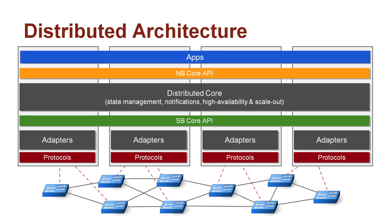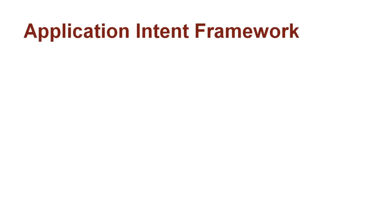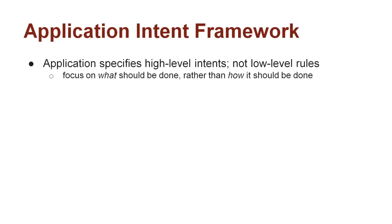ONOS abstractions include a global network view, allowing applications to program their view of the network, and an application intent framework allowing them to specify what service they want from the network. Applications specify what they want and do not have to worry about all of the details of how to achieve it.